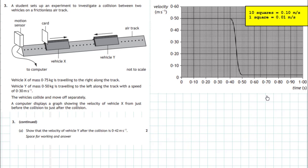Because both velocities of vehicle X are positive, it must be moving to the right throughout the experiment. In these problems, anything moving to the right is positive and anything moving to the left is negative. The classic momentum definition is: the total momentum before (TMB) must equal the total momentum after (TMA), provided there are no external forces acting on the vehicles. Be careful - momentum is a vector quantity, so rightward momentum is positive and leftward momentum is negative.